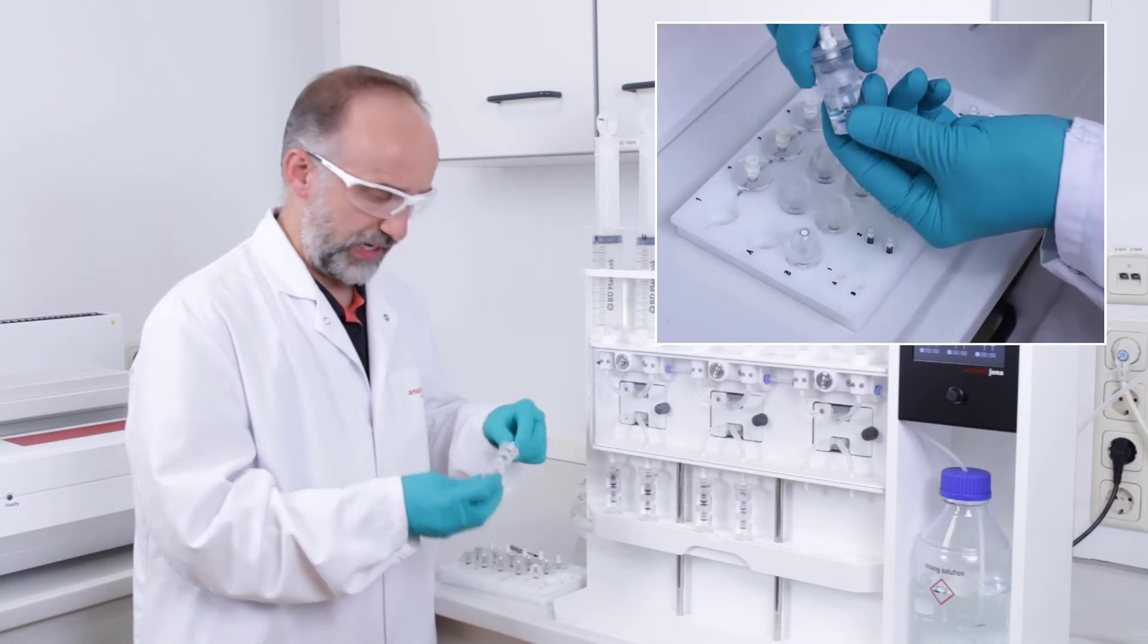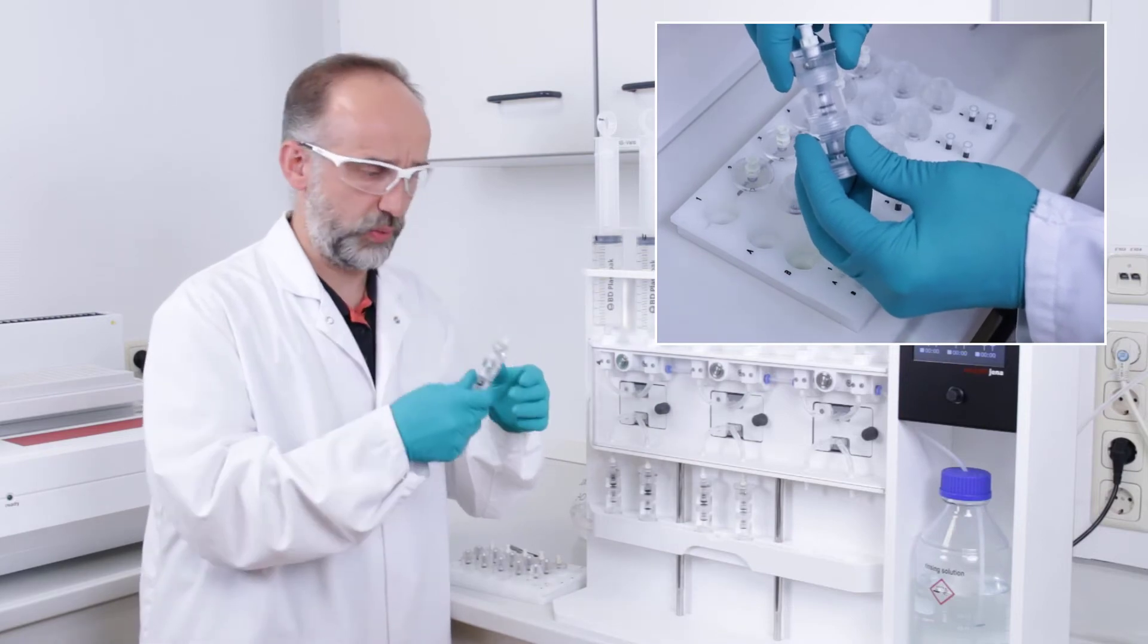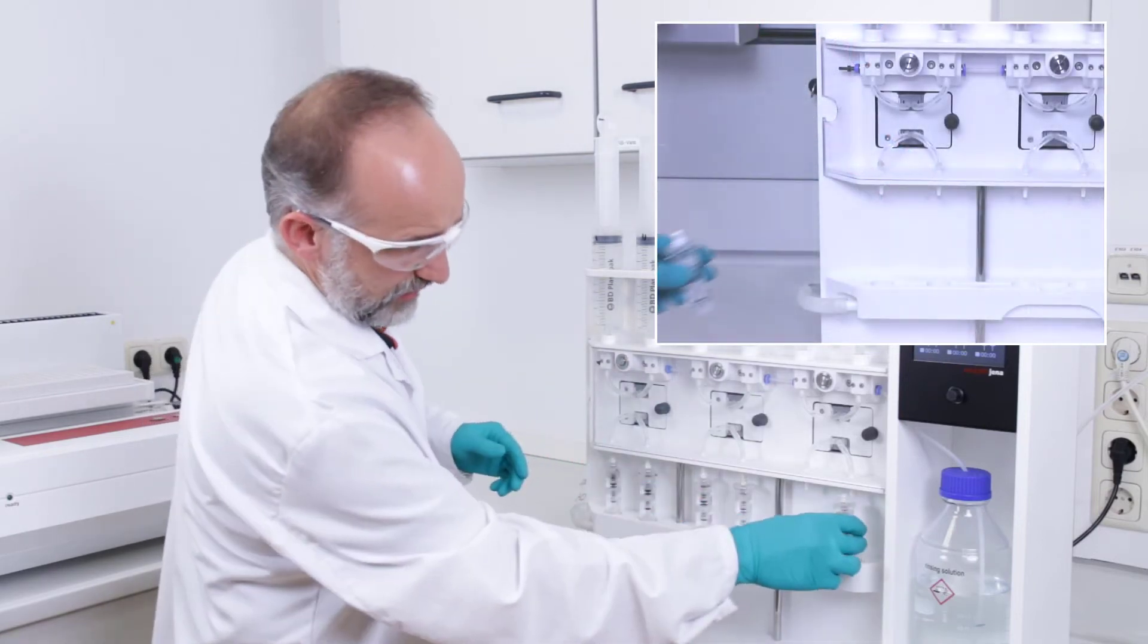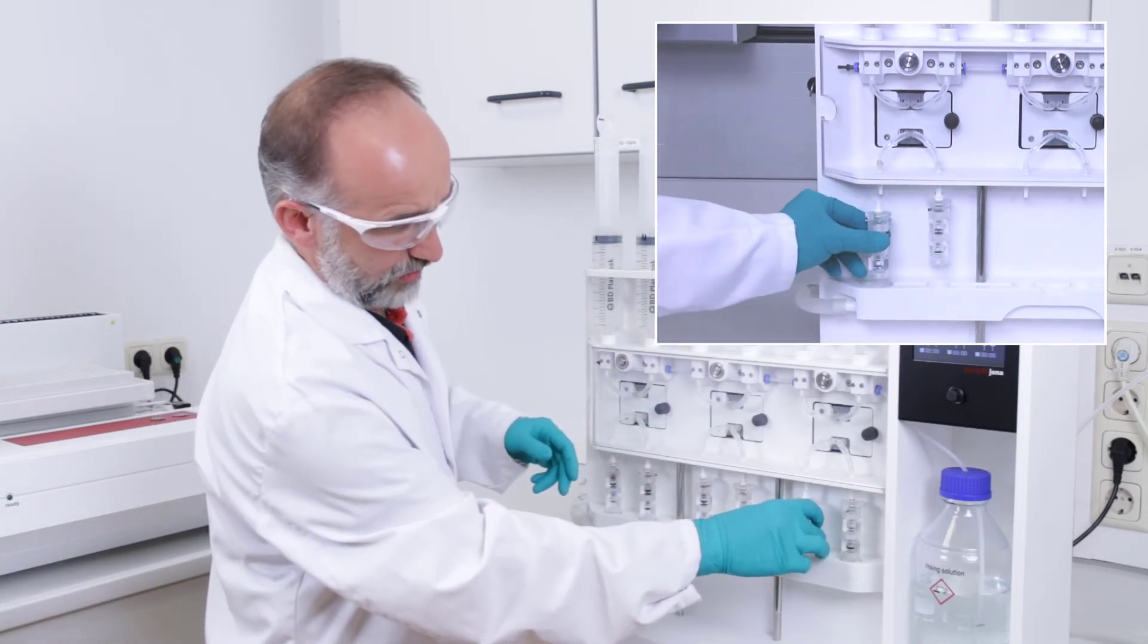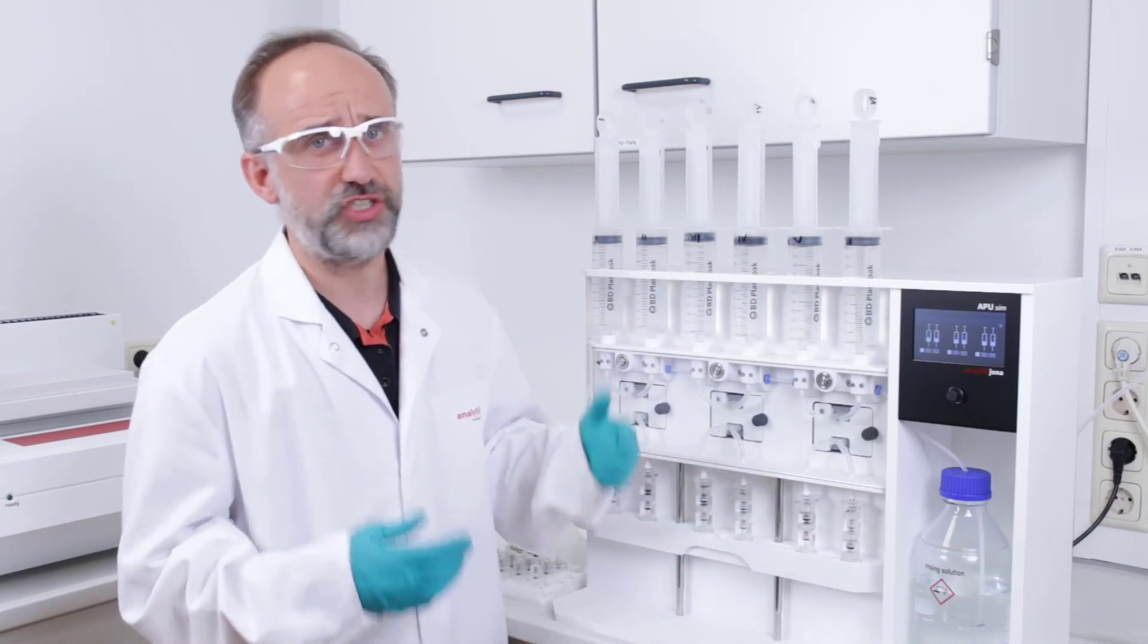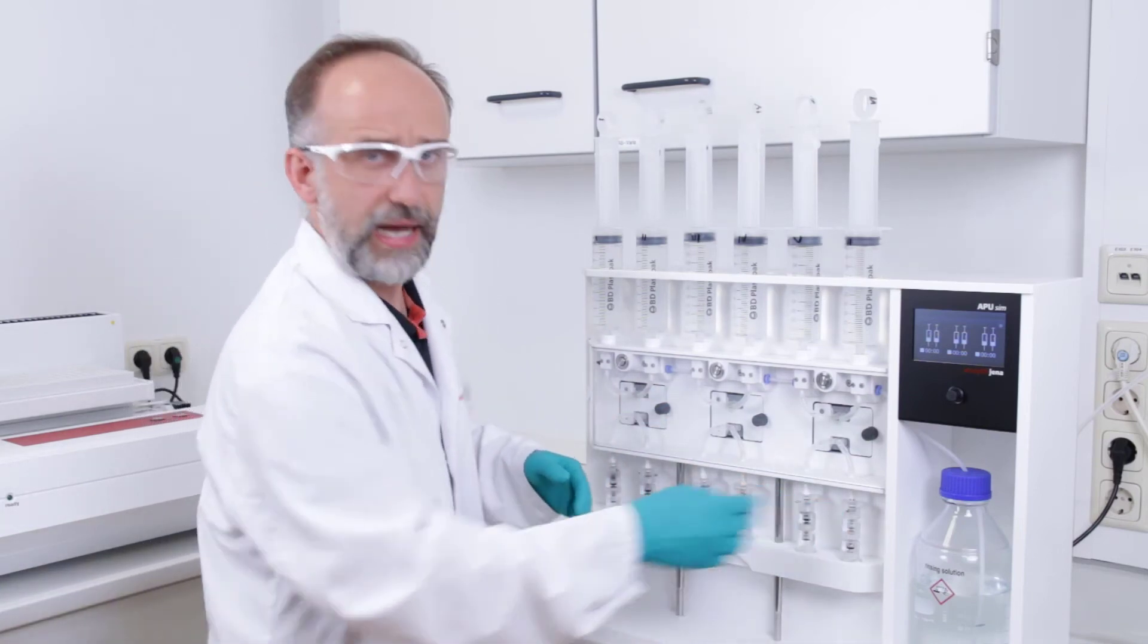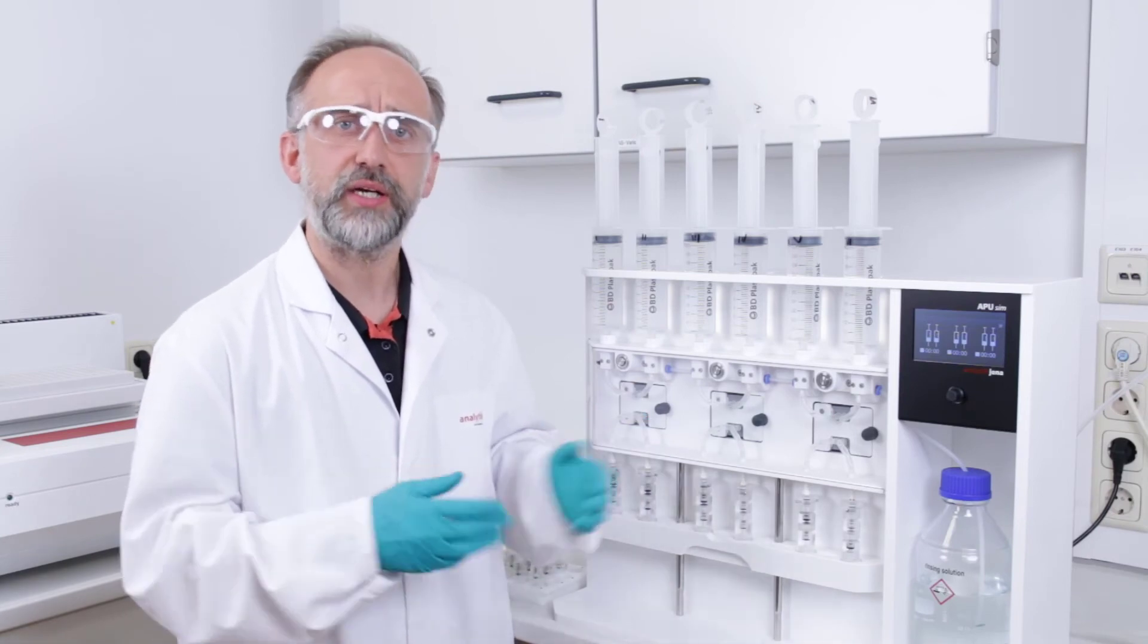So after we have everything mounted together, we have our duplex column here available. Then we can put it directly to the position where it belongs to and then we can go ahead. The Luer-lock connection is quite simple to add the containers and to remove the duplex column in the same way quite easily.